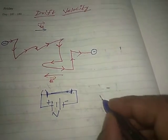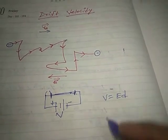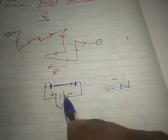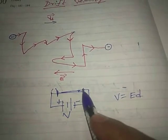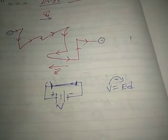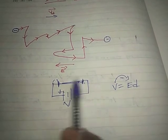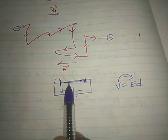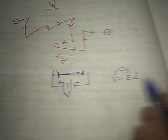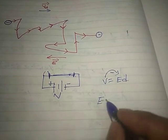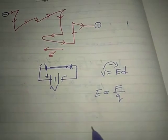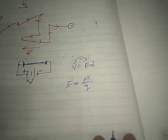We have the formula V is equal to Ed. So we are providing the potential difference with the help of the battery to the conductor. An electric field is set up across the ends of the conductor due to the potential difference applied. The electric field formula is E equal to F by Q — the force experienced by the unit positive charge kept at that point.